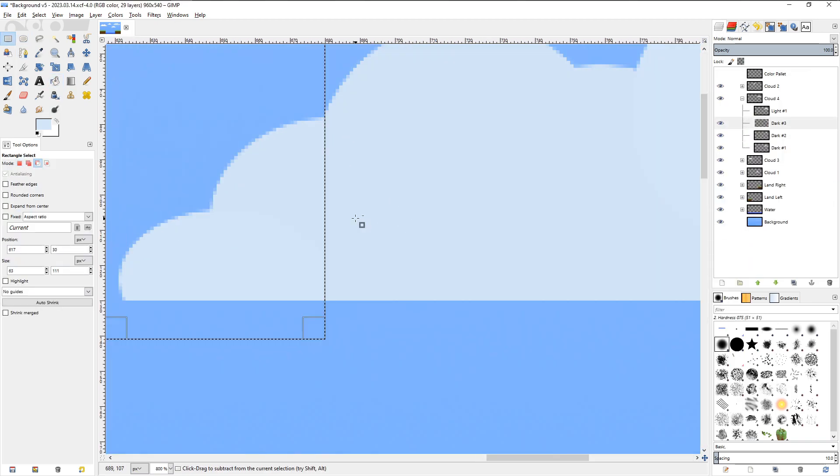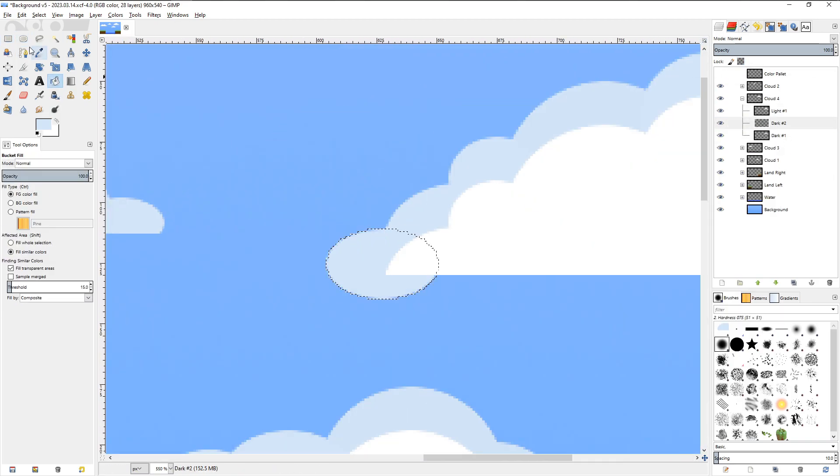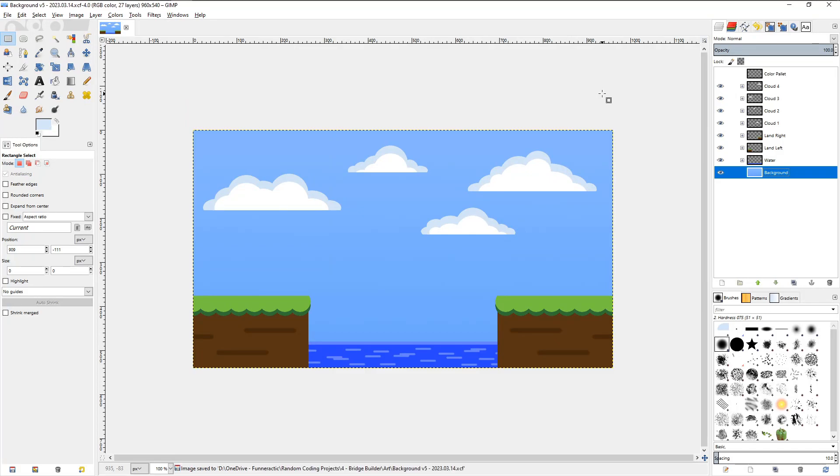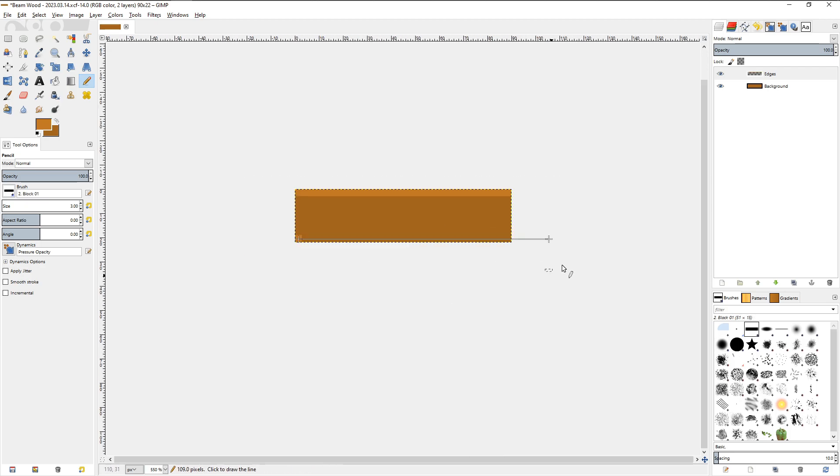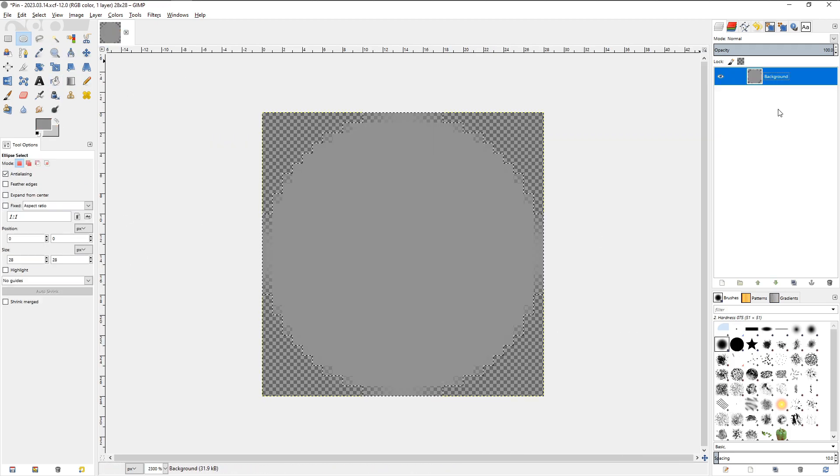I decided to keep the background simple by drawing the clouds, land, and water all into one image. Then, I created a separate image for the beam, and a separate image for the pin.